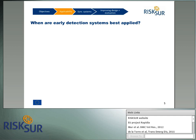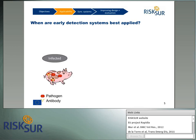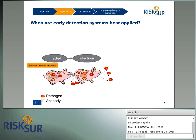Through these examples we have seen the importance of infection dynamics in the early detection of disease. To describe when an early detection system is best applied, we will go over the characteristics of a very contagious disease. When an animal is infected, a very contagious disease manages to escape the immune response system of the host, either by multiplying quicker than the antibody response or by employing hiding mechanisms from the immune system. Next, it progresses very quickly to the infectious state — the state where the animal starts spreading the pathogen.